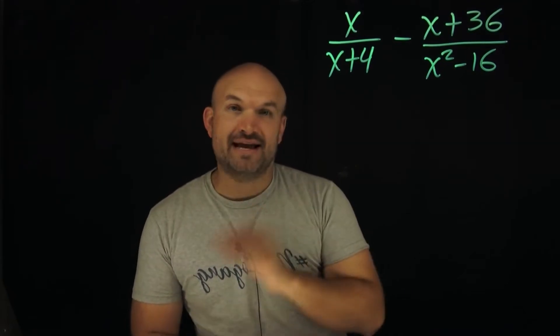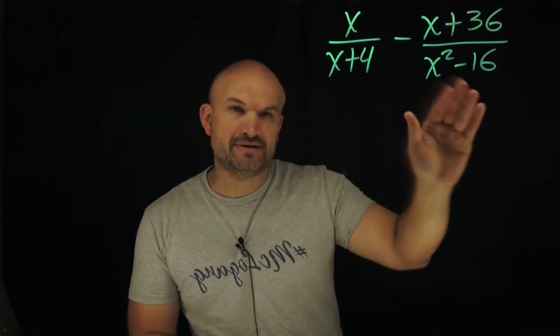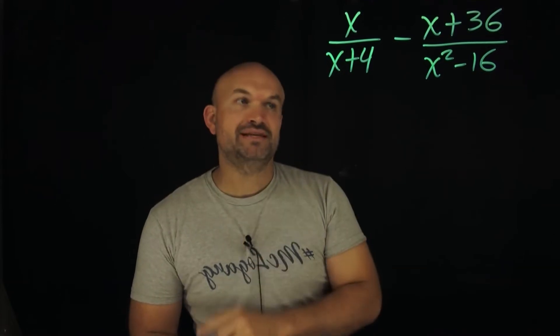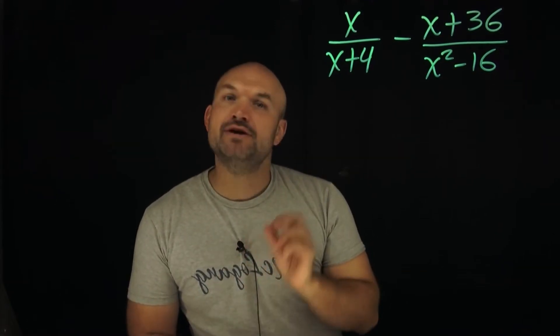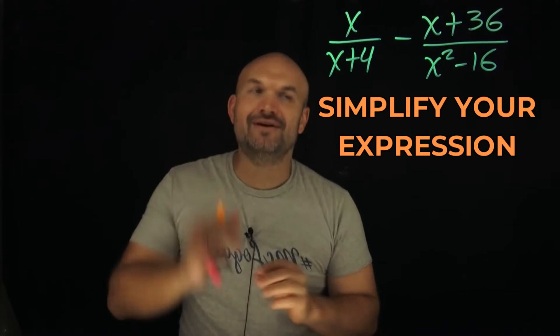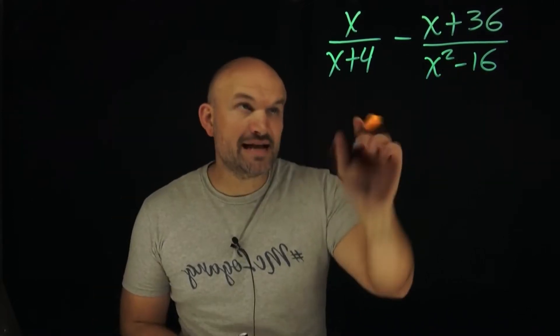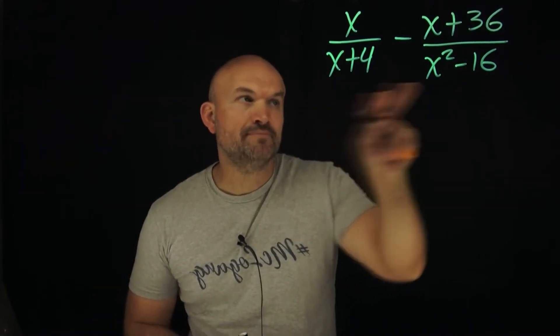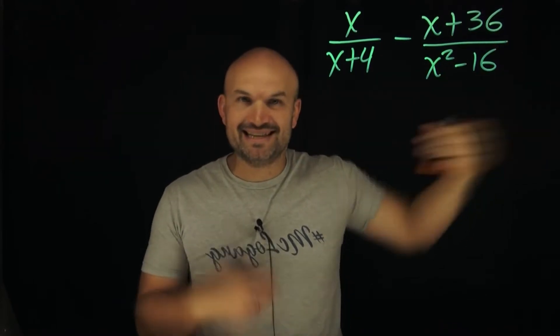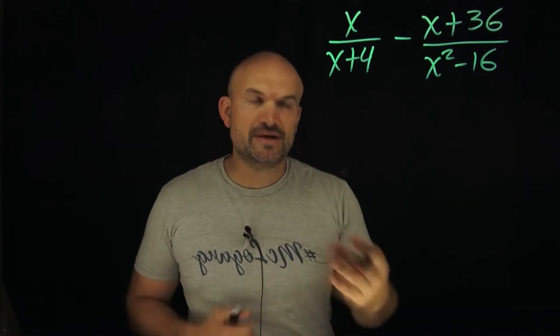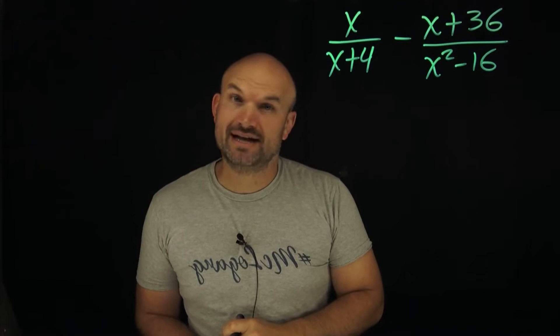Now the fastest easiest way to identify a common denominator is to multiply your denominators, but that is not always going to be the case for every problem. That is why you always want to look to simplify your expression first. So in this example I can't really do anything with x plus 4, but I do recognize that x squared minus 16 represents a difference of two squares. So I can factor that down to x minus 4 times x plus 4.